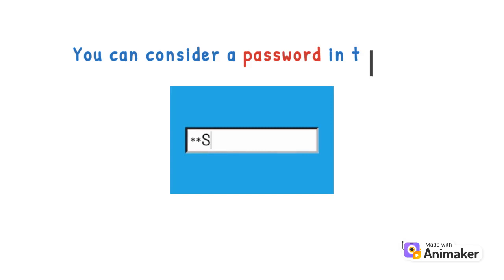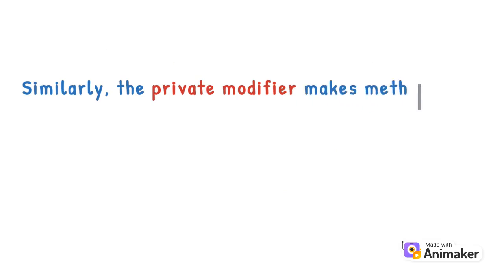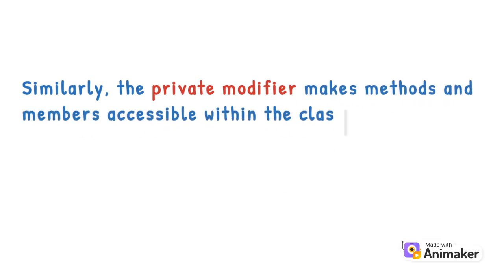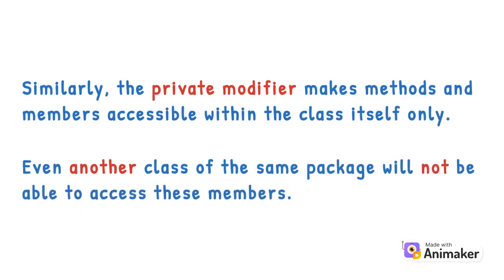You can consider a password in this case. You don't want to share it with anyone, right? Similarly, the private modifier makes methods and members accessible within the class itself only. Even another class of the same package will not be able to access these members.